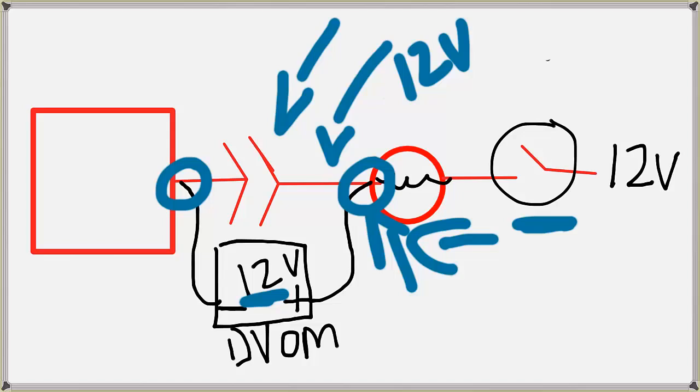And since this other lead here is on a ground, it's showing me the potential of 12 volts for that circuit.